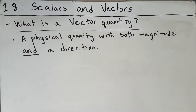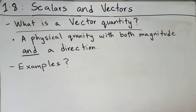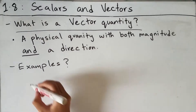Now let's talk about vector quantities. A vector quantity is similar to a scalar quantity in that it has a magnitude and is a physical quantity. What makes it different is that a vector quantity also has a specified direction, which a scalar quantity does not. One example of a vector quantity is displacement.